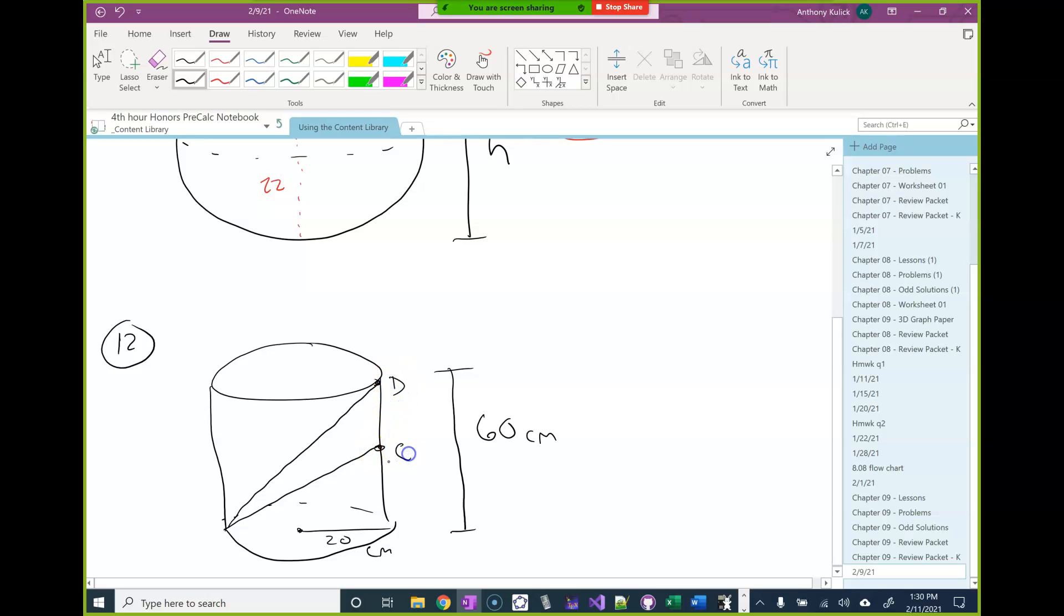And it says, calculate the value of x and the value of y. Call this d, we call this c, we call this a. Call that x and that y. Okay. Let's see here. What's going to be the easiest way to do this? Oh, it also tells us c is the midpoint. Good. Sorry, missed that.